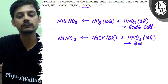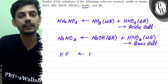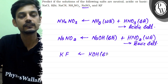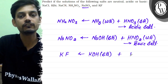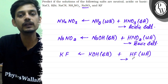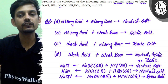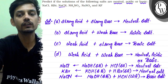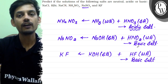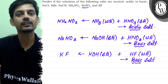The last salt is KF, formed by the neutralization of KOH, a strong base, with HF, which is a comparatively weaker acid. So this salt will also be a basic salt. In summary: the first two salts are neutral, the third is basic, the fourth is acidic, and the fifth and sixth salts are both basic. Hope this clears the question — best of luck, thank you.